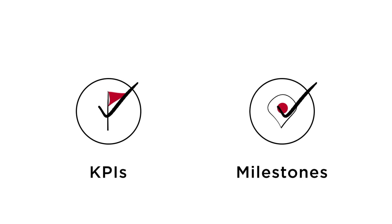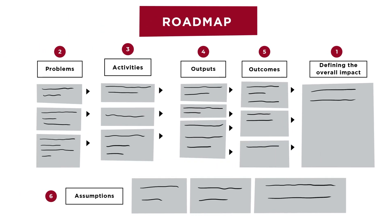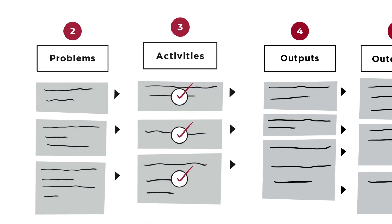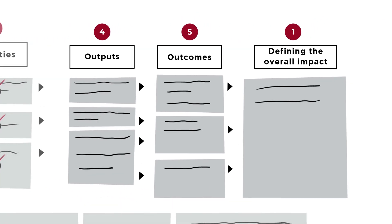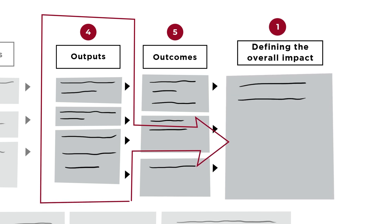You might be wondering how KPIs and milestones differ. Milestones are evidence that you, as the grantee, are doing what you said you would do to implement the project. In other words, milestones are signals that the key activities on the roadmap have been achieved. KPIs track whether or not the project is achieving the social impact forecasted in your roadmap.